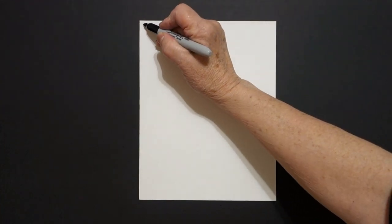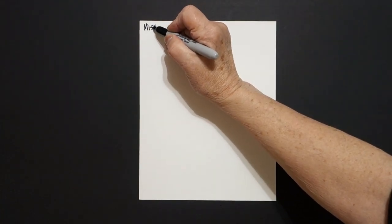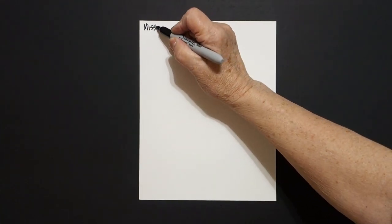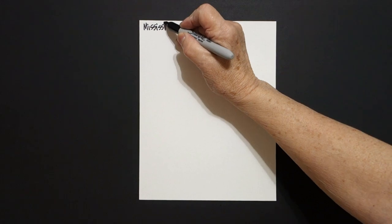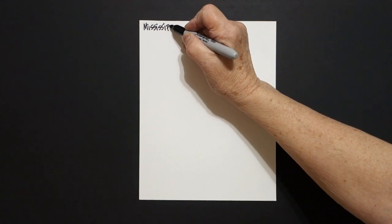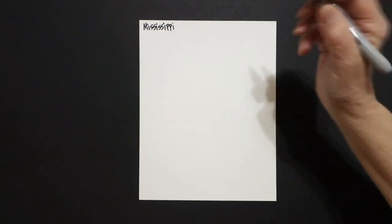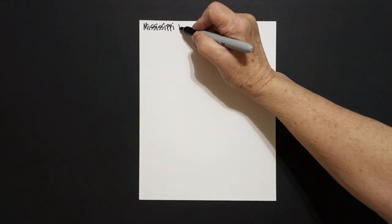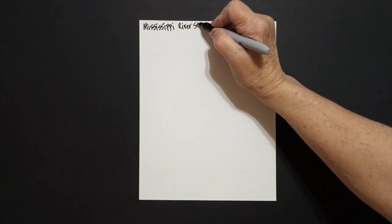Today's project is how to draw the Mississippi — M-I-S-S-I-S-S-I-P-P-I — the Mississippi River states.